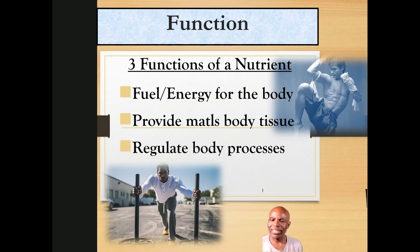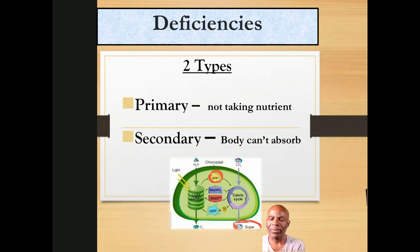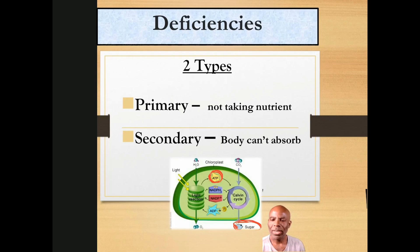We're going to see later on that if you don't get enough of those nutrients, then you may get a deficiency or have some problems. So let's talk about deficiencies. There are two types: primary and secondary. A primary deficiency is basically when you're not actually taking that nutrient — not eating a food or a diet that has those vitamins, minerals, or other nutrients in it.